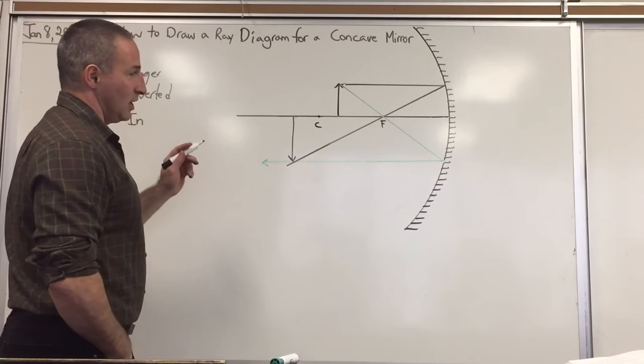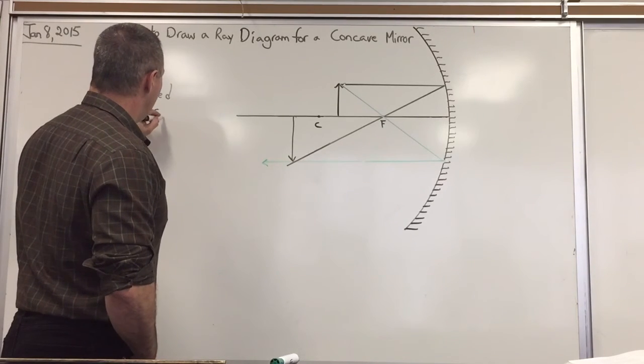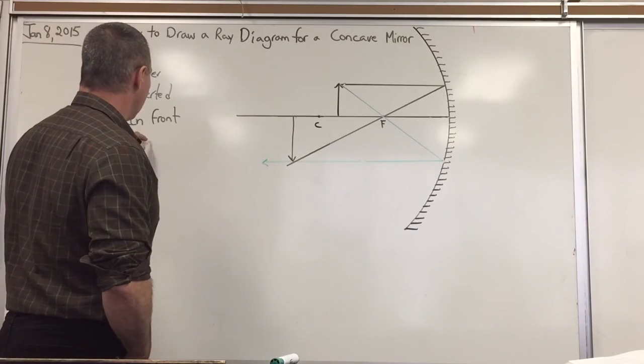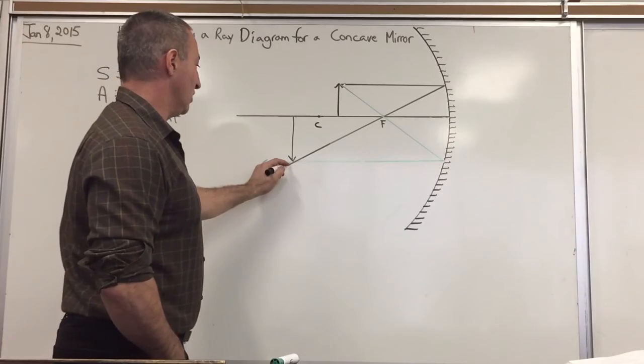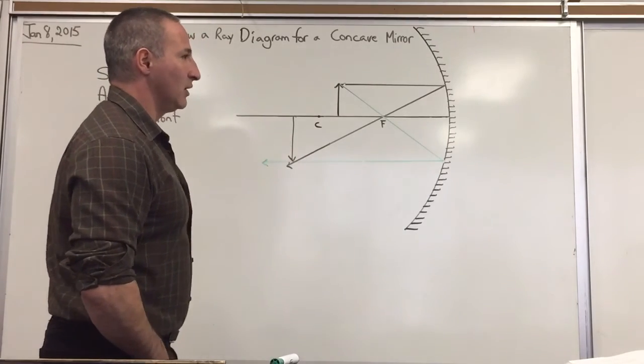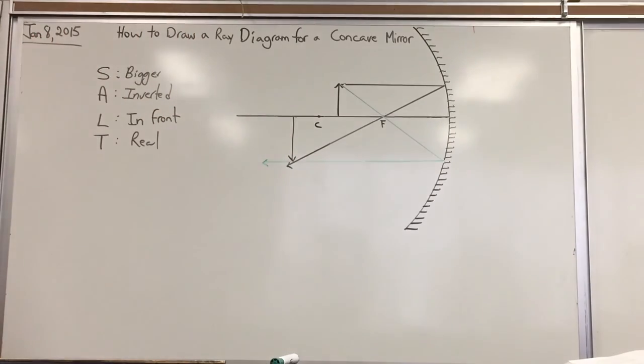Which means it's a real image which can be focused onto a screen, because the actual rays will converge onto a point. It makes them focusable. So that is how to draw a ray diagram for a concave mirror.